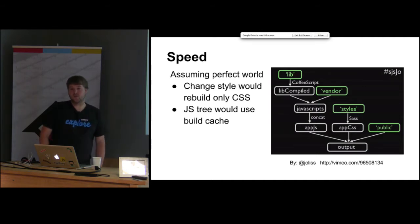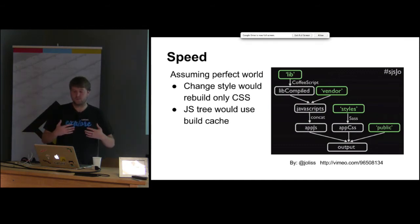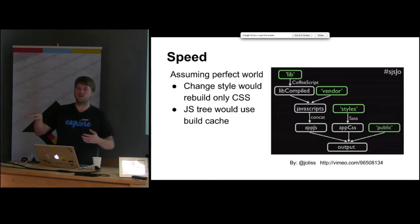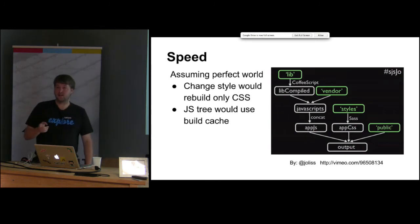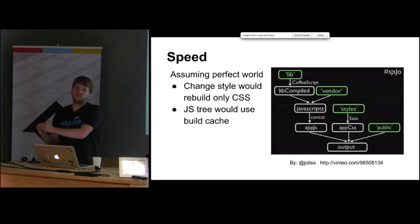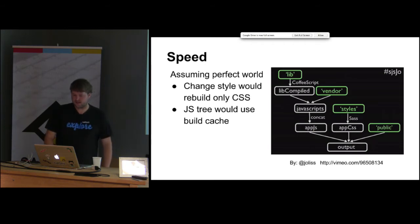For one-to-one operations like JSHint, the base Broccoli filter is smart enough to know you changed just one JavaScript file and only needs to run JSHint on that one file. But for Sass — because of the way it imports things — if you change any one Sass file, you have to rebuild the whole output. It's up to individual components to decide that behavior.